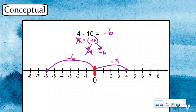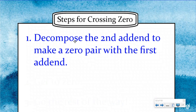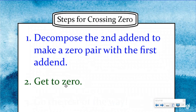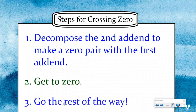Let's take a look at the steps we just did, name them, and write them down in our notes so we can use them. Step one: decompose the second addend to make a zero pair with the first addend. The first addend is where you start — decompose the second one to make sure you get back to zero. Step two: get to zero. Step three: go the rest of the way. It's pretty easy once you get to zero. Let's use these three steps.